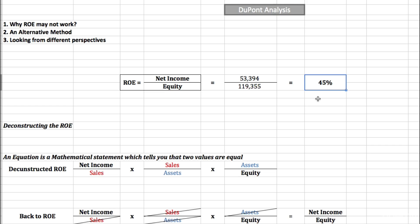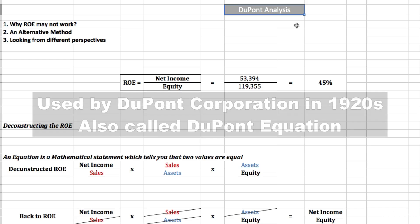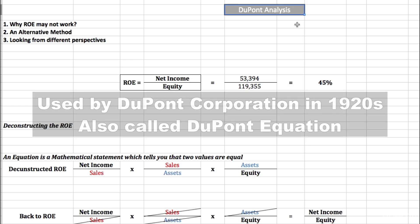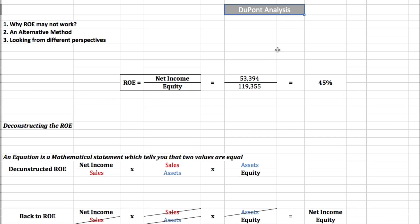But how do we know if the return on equity, in this case, is healthy for the business? To do so, we have to look at another method, which is called DuPont analysis. The reason why this is called DuPont analysis is because it was first used by DuPont Corporation at the beginning of the 20th century. Now let me show you how this DuPont analysis works.